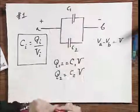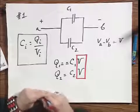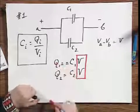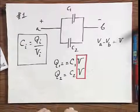And in this particular case, where the two are parallel, they have this in common, and the Q's are clearly different because the C's are different.